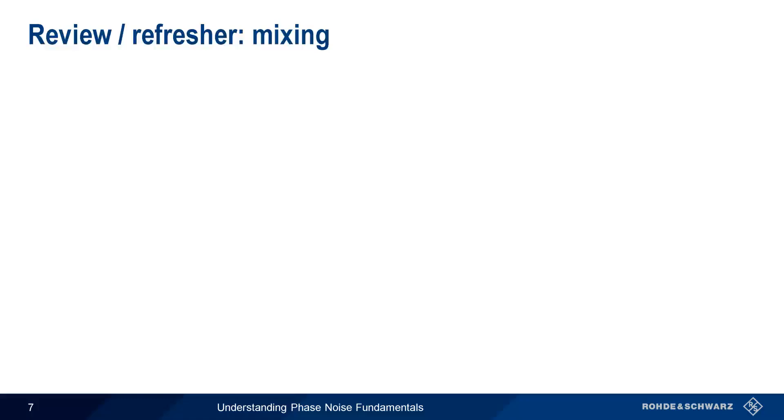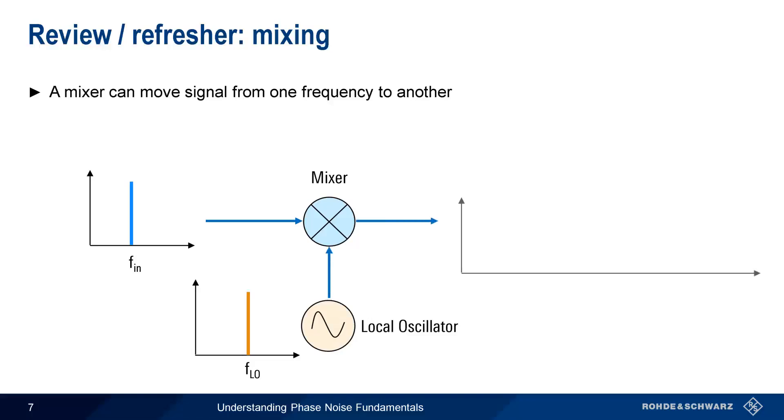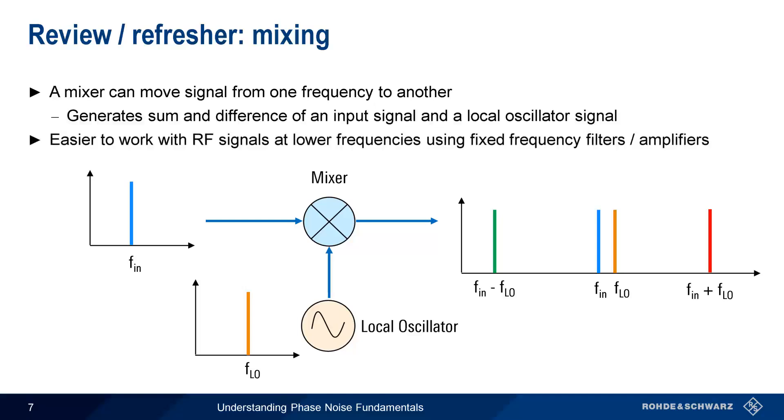Before we go on, let's pause for a brief refresher on mixing. A mixer is a device that can be used to move signals from one frequency to another. It does this by combining an input signal with a local oscillator to produce an output that contains not just the original signals, but also signals at the sum and difference of these two frequencies. Mixing is widely used in RF receivers for two reasons. First, it's generally easier to work with lower frequency signals. And second, mixing allows the use of fixed frequency filters, amplifiers, etc. We simply mix the signals down to a convenient frequency for processing. Note that we can use the same process to mix signals up in frequency as well.